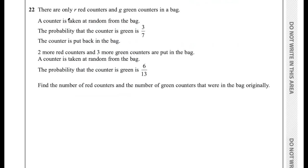Question 22 says there are only R red counters and G green counters in a bag. A counter is taken at random — the probability it is green is 3/7. The counter is put back, then 2 more red and 3 more green counters are added. A counter is taken at random again and the probability it is green is 6/13.